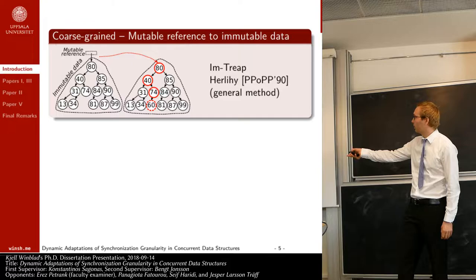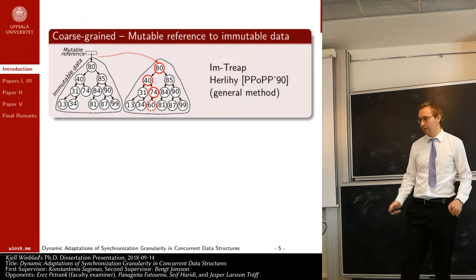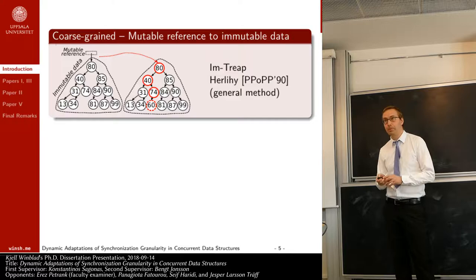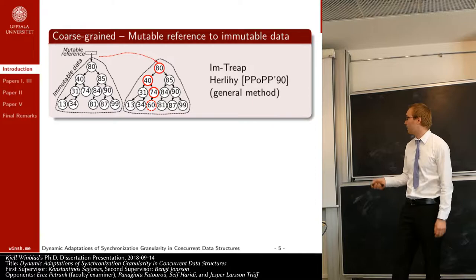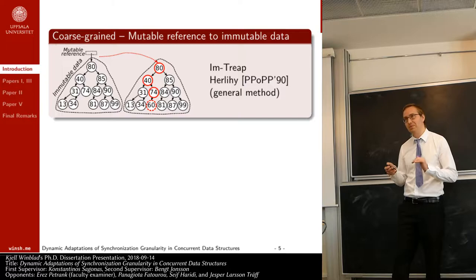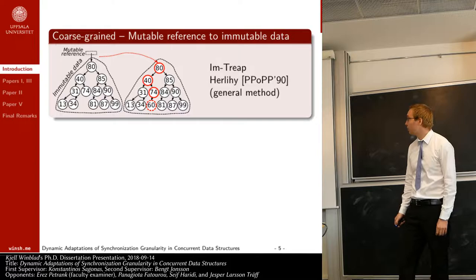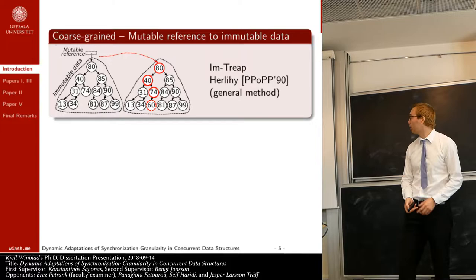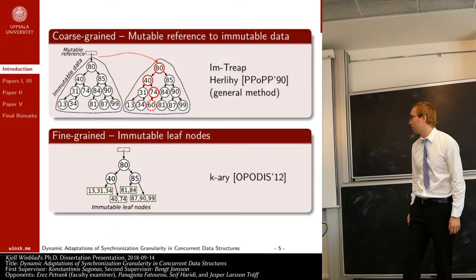This can be done very efficiently when based on a search tree, because you only need to create a new version of the nodes from the root to where you insert the new node. Once updates are in place, range query operations are extremely efficient — they just read the mutable reference and perform the snapshot range query without needing to care about other threads. Unfortunately, if we have parallel updates, this will not scale well on a multi-core machine, as they all need to update this single mutable reference.